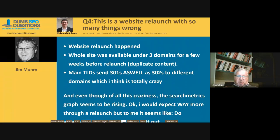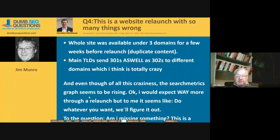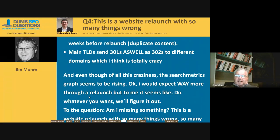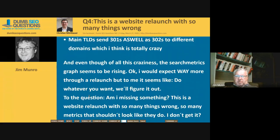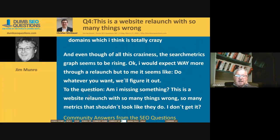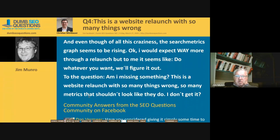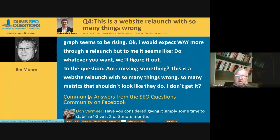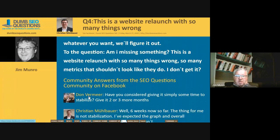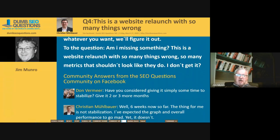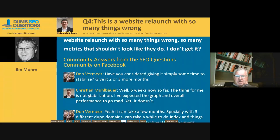Even though all of this craziness happened, the search metrics graph seems to be rising. I would expect way more improvement through a relaunch, but to me it seems like 'do whatever you want and we'll figure it out.' The question is: am I missing something? This is a website relaunch with so many things wrong, so many metrics that shouldn't look like they do — I don't get it.